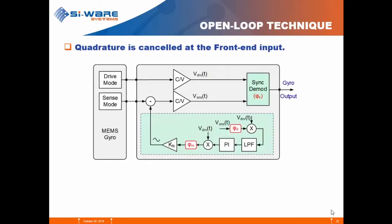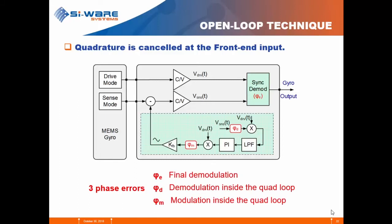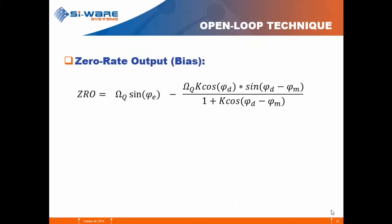This is why we discuss the open loop technique, where the quadrature is cancelled at the input of the sense electronics. We take the sense signal, demodulate it using the drive, pass it through a control loop, modulate it again, and feed it back to the input of the electronics so the quadrature is subtracted. The sense electronics are relaxed since they now only need to accommodate the Coriolis. However, there are now three sources of phase error: phi_e as before, phi_d (the demodulation phase error inside the quadrature cancellation loop), and phi_m (the modulation phase error inside the quadrature loop).